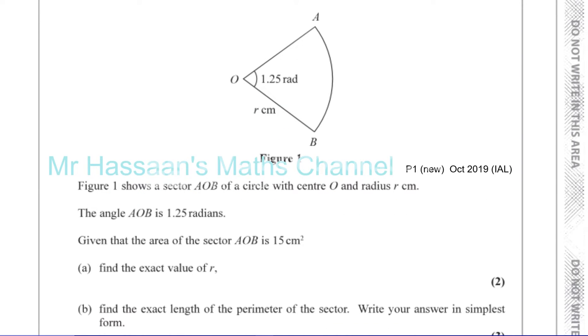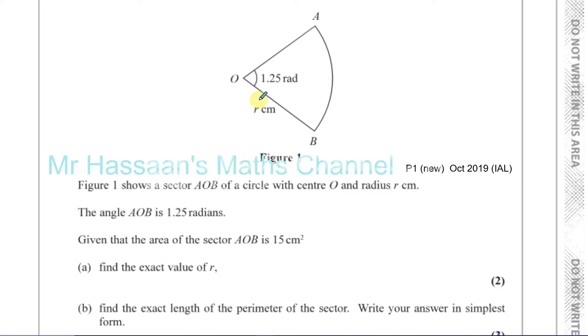And we need to, with that information, first of all find the exact value of R. Now the first thing we need to realize here is what it means when it says exact value of R. This should give you a clue that the answer is not going to be a rational number. It's going to be a number in surd form or in terms of pi.